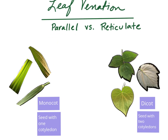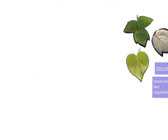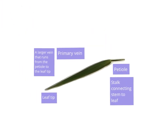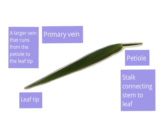Before we go too much further talking about the patterns, let's talk about some basic vocabulary. Every leaf has a petiole, where the stalk that connects the stem to the leaf begins — this area right here. Every leaf also has a leaf tip, which is the very end of the leaf. And all leaves have at least one primary vein, which is a larger vein that runs from the petiole to the leaf tip. Parallel leaves tend to have more than one primary vein, but you can also find more than one primary vein in a reticulate leaf.